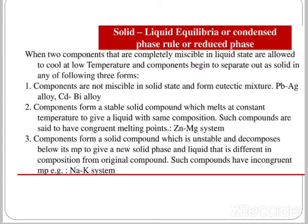When two components completely miscible in the liquid state are cooled, components begin to separate as solid in one of three forms. First, components are not miscible in the solid state and form a eutectic mixture, e.g., lead-silver alloy or cadmium-bismuth alloy. Second, components form a stable solid compound which melts at constant temperature giving a liquid of the same composition — these have congruent melting points, e.g., zinc-magnesium system. Third, components form an unstable solid compound that decomposes below its melting point — these have incongruent melting points, e.g., sodium-potassium system.